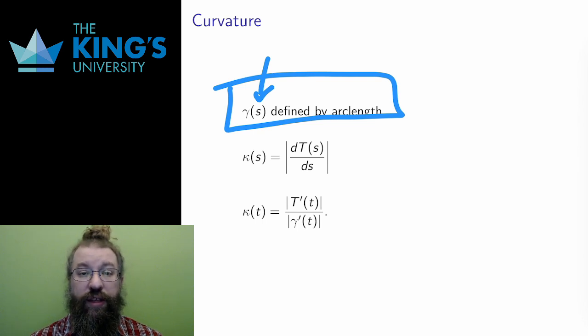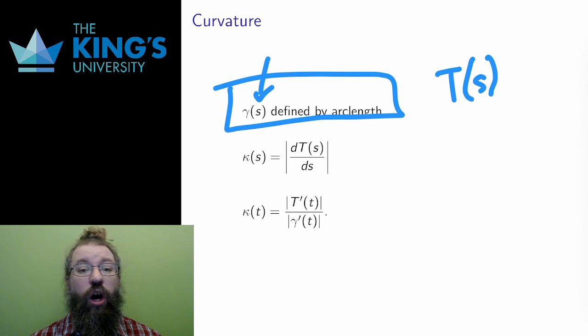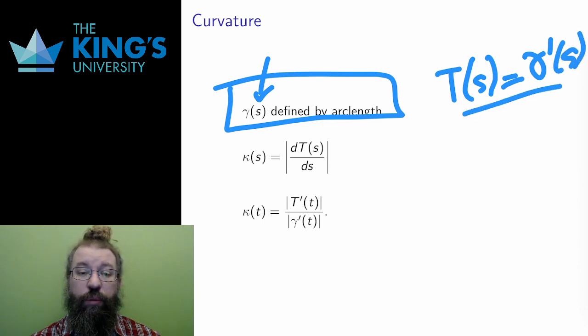One of the nice things about the parametrization by arc length is that its tangents always have length 1, because time and distance match up perfectly. So, this capital T of s is just, in fact, gamma prime of s.